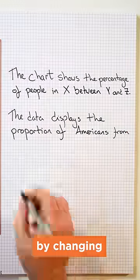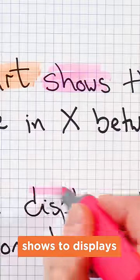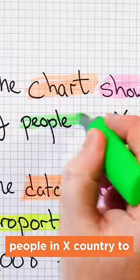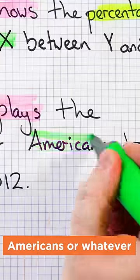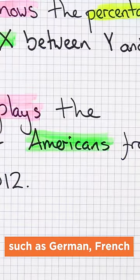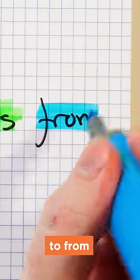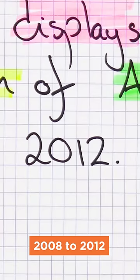And we can easily paraphrase this by changing chart to data, shows to displays, the percentage of to the proportion of, people in X country to Americans or whatever country they're from such as German, French, between this date and that date to from 2008 to 2012.